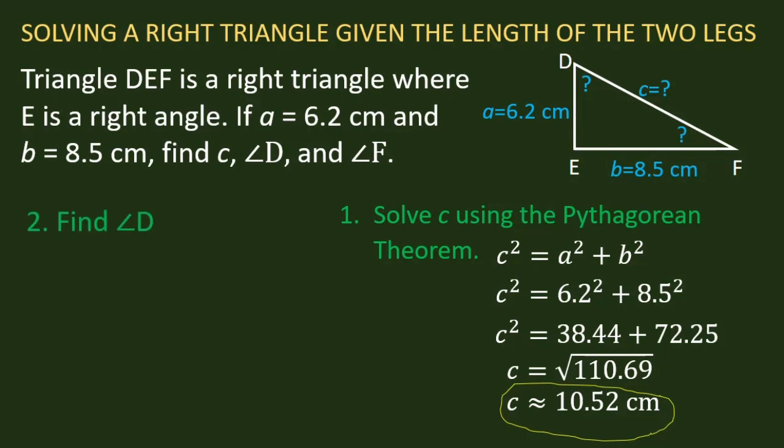Now we have to look for angle D. We can use the trigonometric ratios, and the one which is easy to use is sine. sin D = opposite/hypotenuse = 8.5/10.52. To find angle D, we have D = sin⁻¹(8.5/10.52), and D is 56.77 degrees.